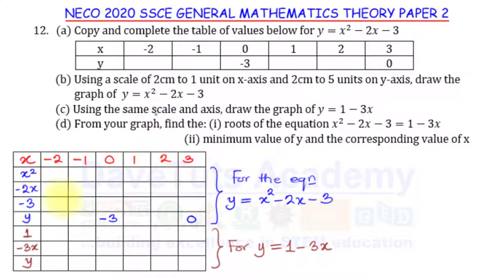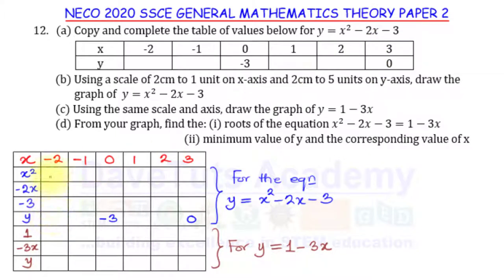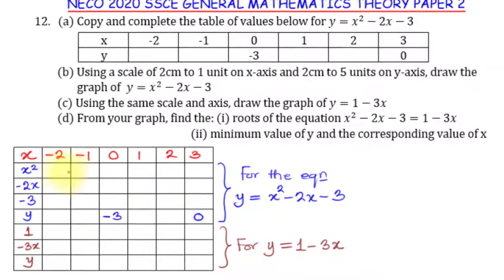Here I have the table template. I'll use blue ink for the quadratic equation y = x² - 2x - 3 and brown ink for the linear equation y = 1 - 3x. For the quadratic, we take the components x², -2x, and -3 separately, sum them to get y, and confirm against the values already given.